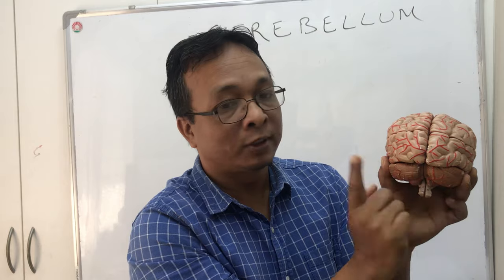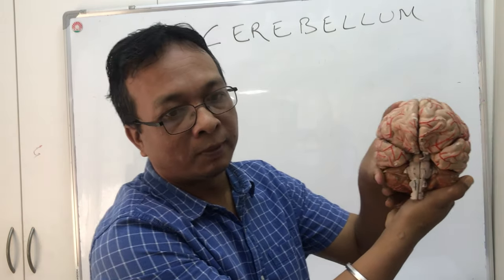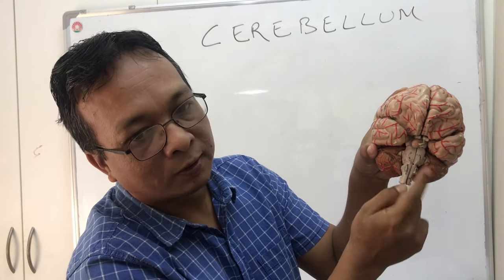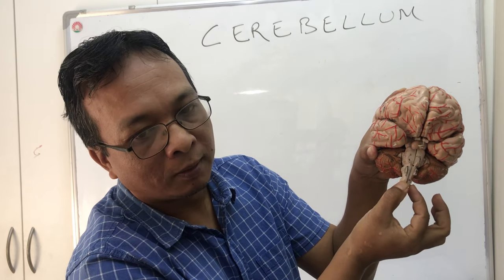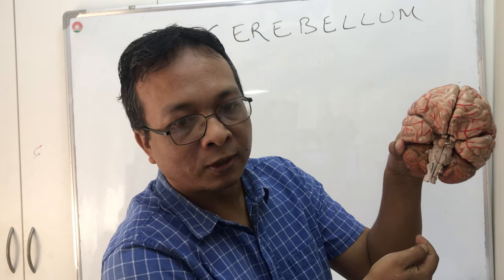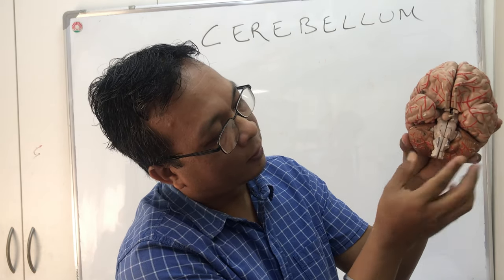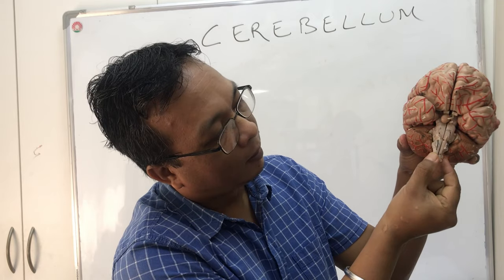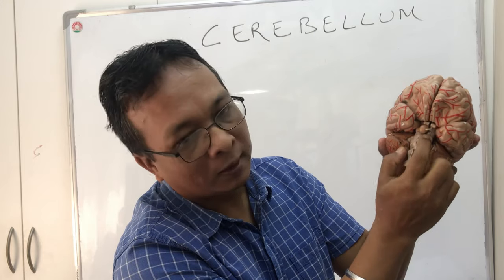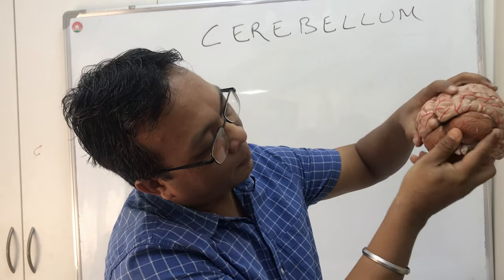If you see from the front, this is the pons - the swelling part. Below the pons is the medulla, and above the pons there is a structure called the midbrain. So the whole cerebellum communicates with three structures: medulla, pons, and midbrain.